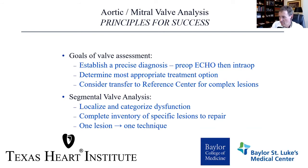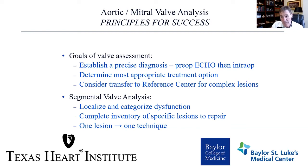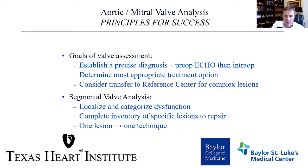The principles for success in aortic and mitral valve repair: number one, assess the valve — establish a precise diagnosis with preoperative echo, then intraoperative echo, then visualization. Determine the most appropriate treatment option. If you're a surgeon who doesn't do complex mitral valve repairs, please learn or consider transfer to a reference center, because a mitral valve repair is much better for the patient than a replacement — though patients do need replacement if they have fibrotic, scarred-in, or calcified valves. You must do a segmental valve analysis, localize and categorize all dysfunction, and do a complete inventory of specific lesions. Even if P1, P2, A3, and A2 are all prolapsed, take them one at a time — one lesion, one technique. Thank you again for inviting me.